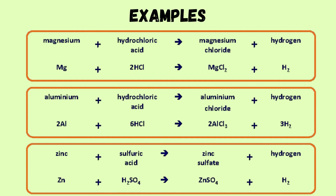Examples: magnesium plus hydrochloric acid gives magnesium chloride plus hydrogen. Aluminium plus hydrochloric acid gives aluminium chloride plus hydrogen. Zinc plus sulfuric acid gives zinc sulfate plus hydrogen.